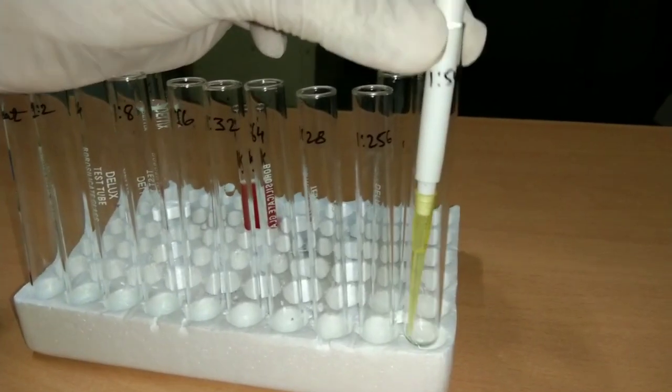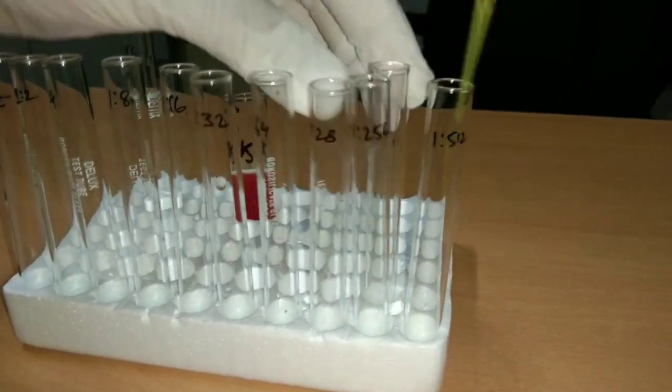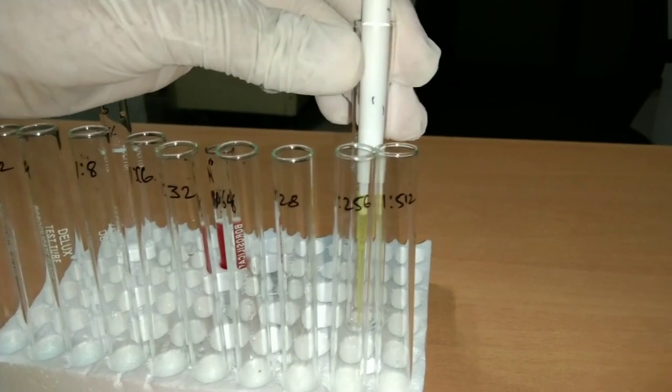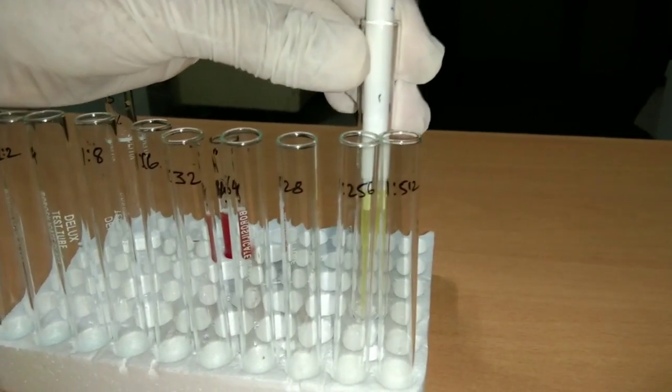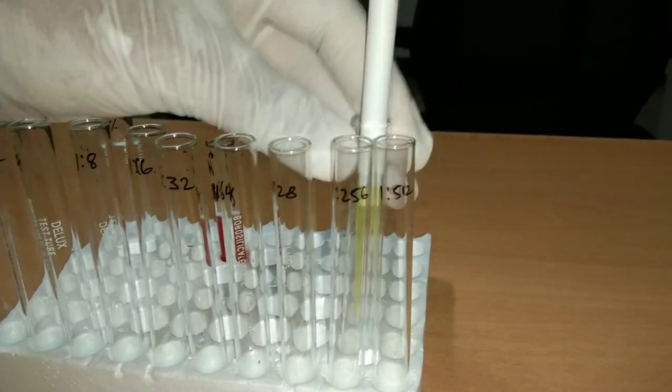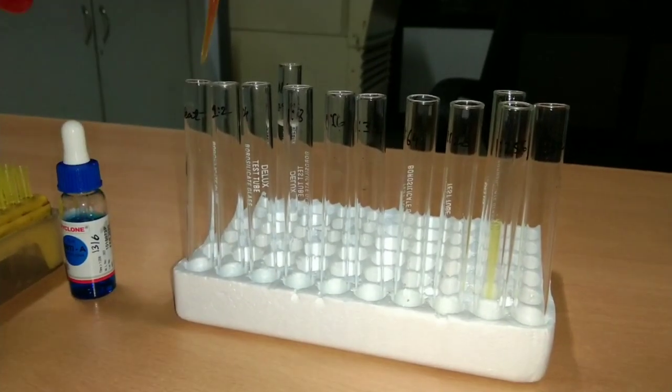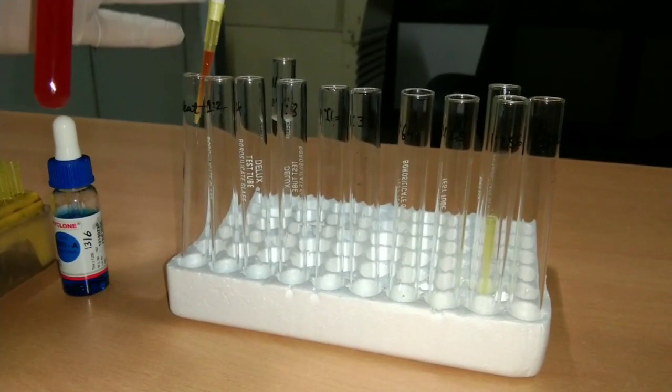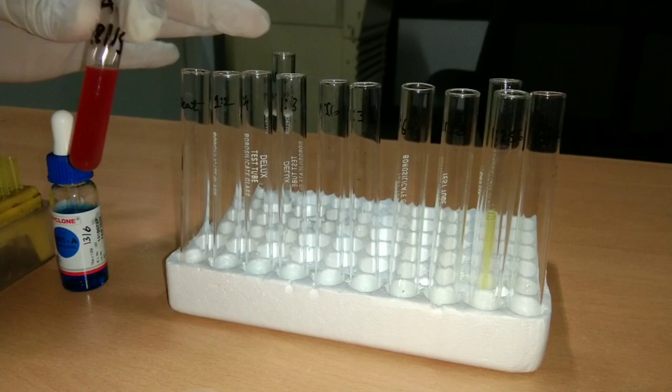Remove 100 microliters from the last tube and save it for further dilution if required. Then add 100 microliters of 5% ASLs to each tube.